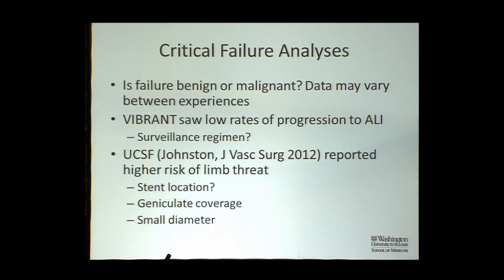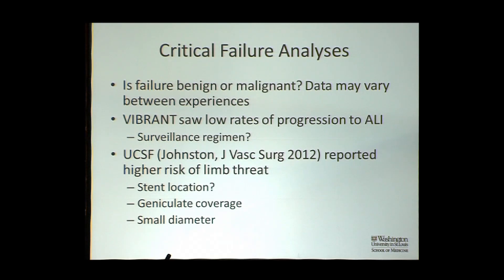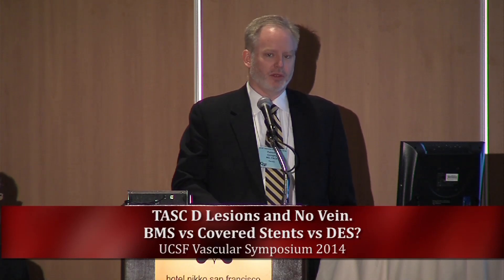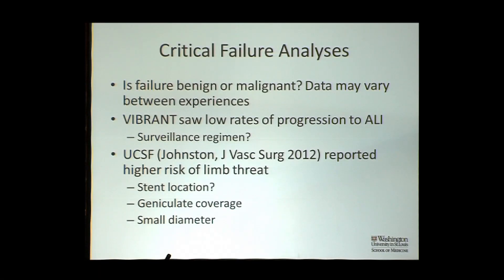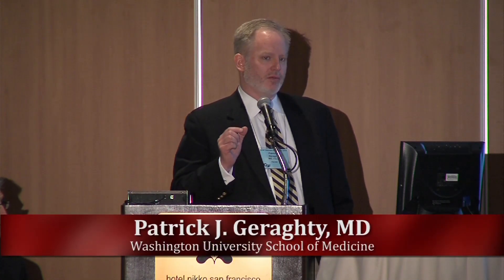It's very important as we make final treatment decisions to think about our failure analysis and the failure patterns we expect. Is it benign or malignant? The data may really vary between experiences. When we ran the Vibrant trial, we saw very low rates of progression to acute limb ischemia — I still can't statistically prove that was due to the surveillance regimen mandated by the trial, but I suspect that's likely the case. The UCSF group has reported a significantly higher risk of limb threat when following aggressive covered stenting patients. Stent location is a player — if you're covering geniculate collaterals, that's a problem. And I still can't trust putting a 5-millimeter Viabon in somebody; I just don't think it's going to be a good performer over time.